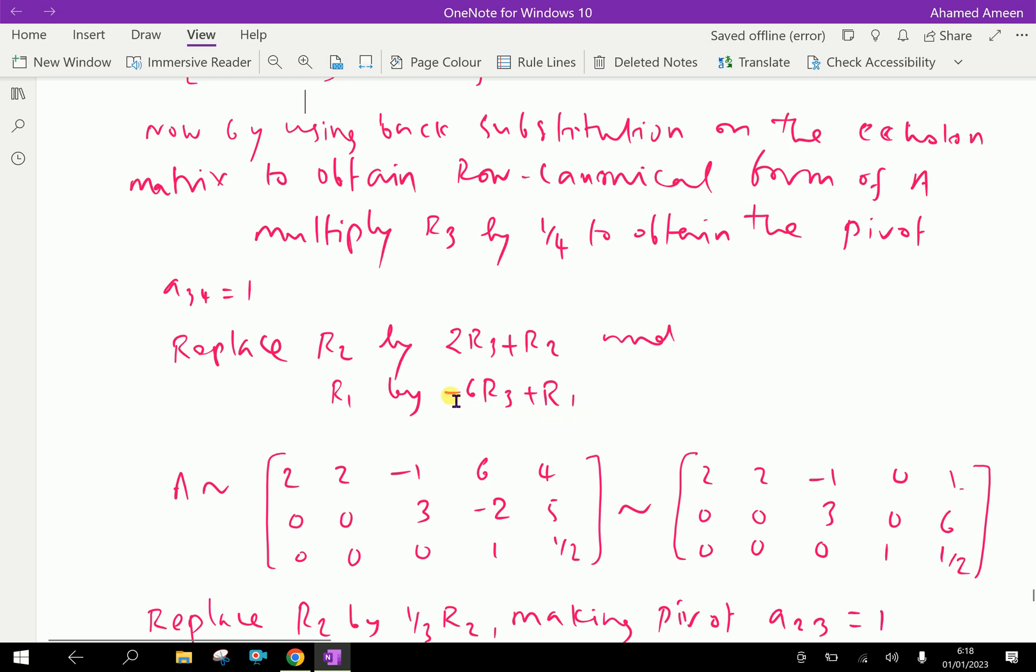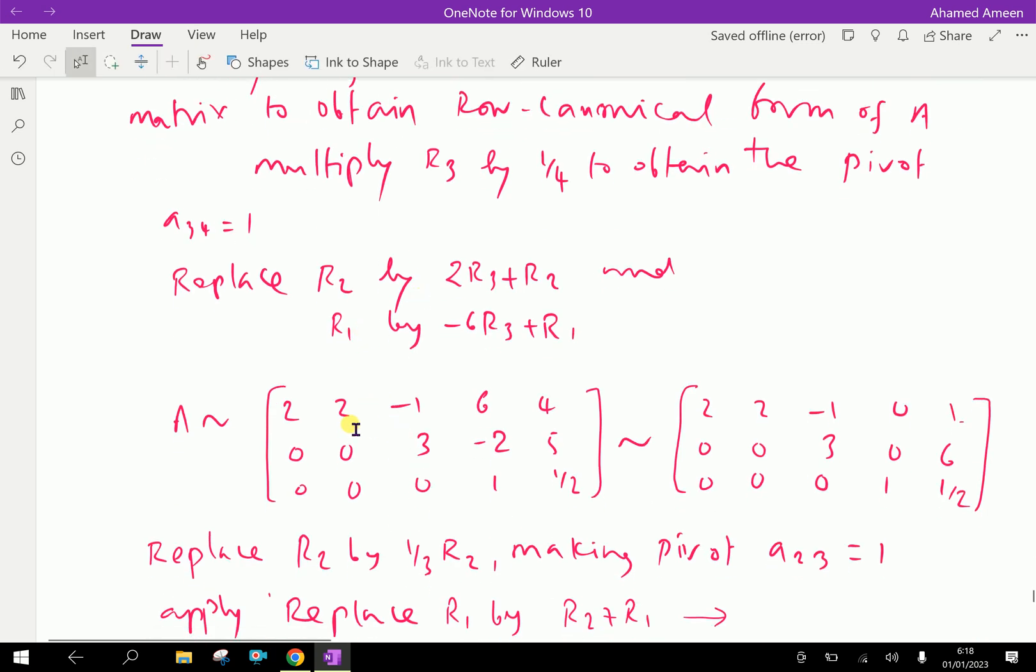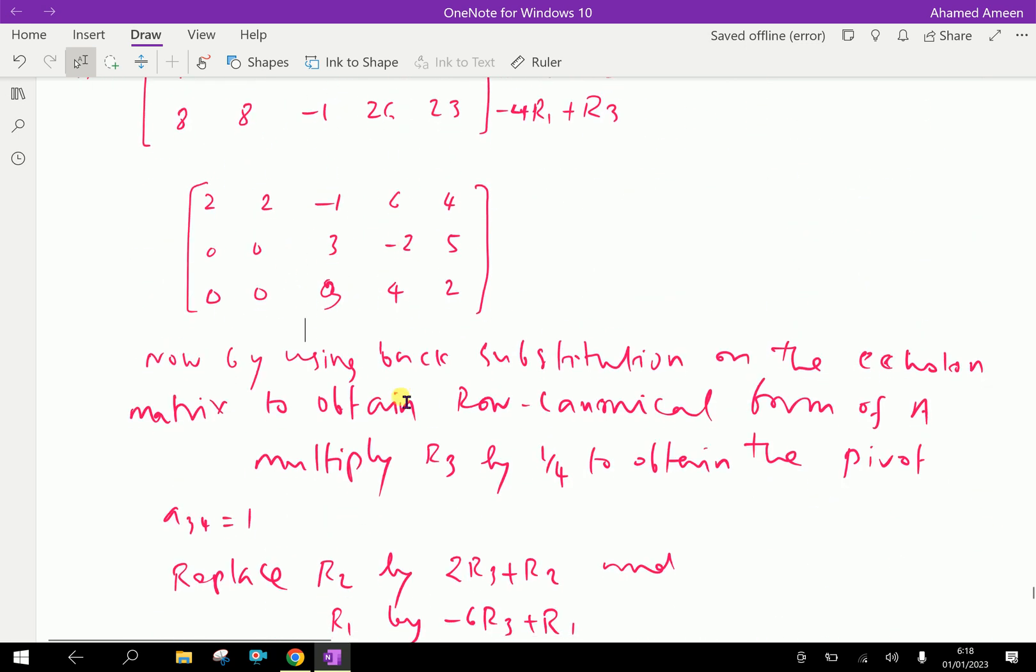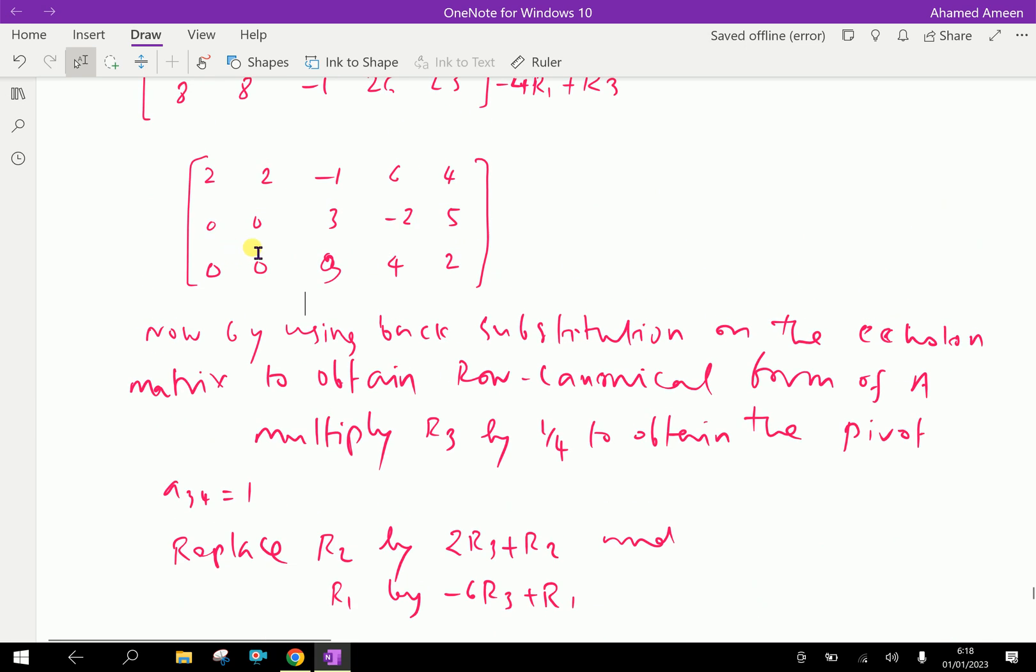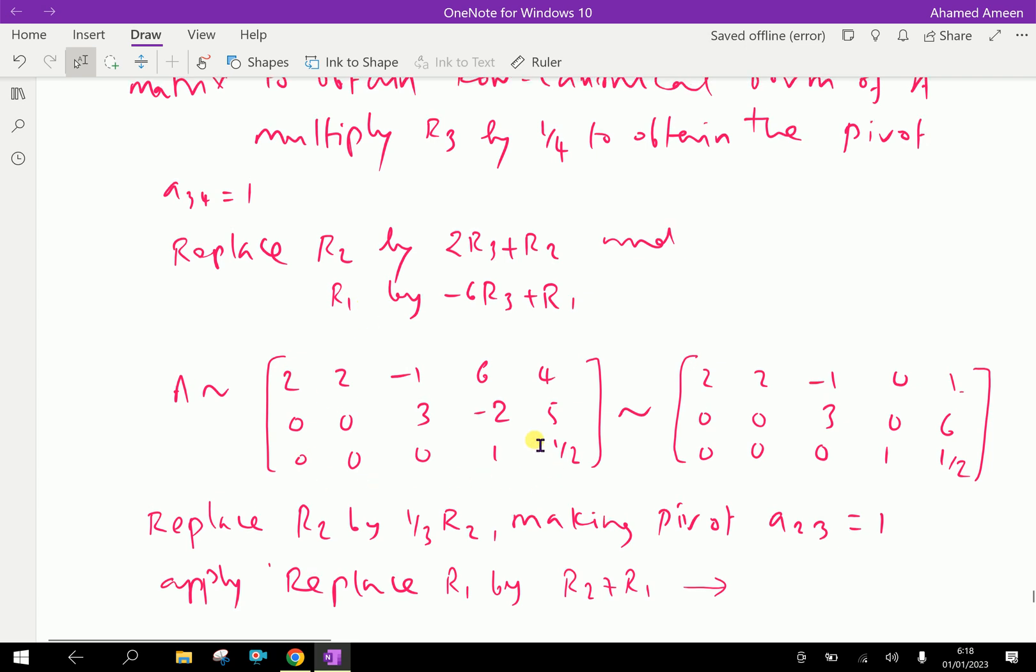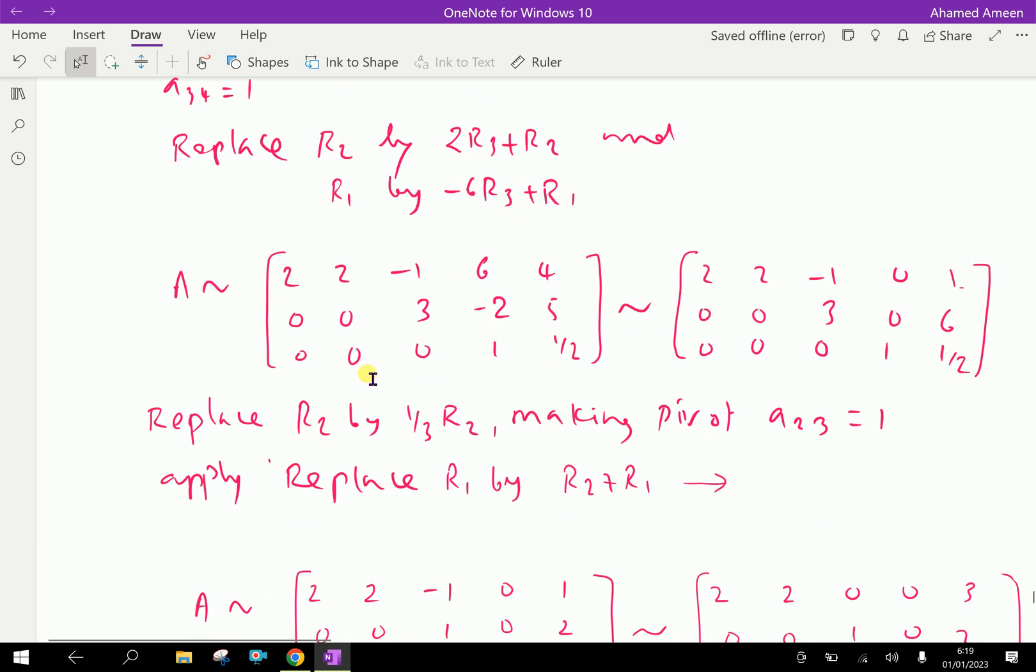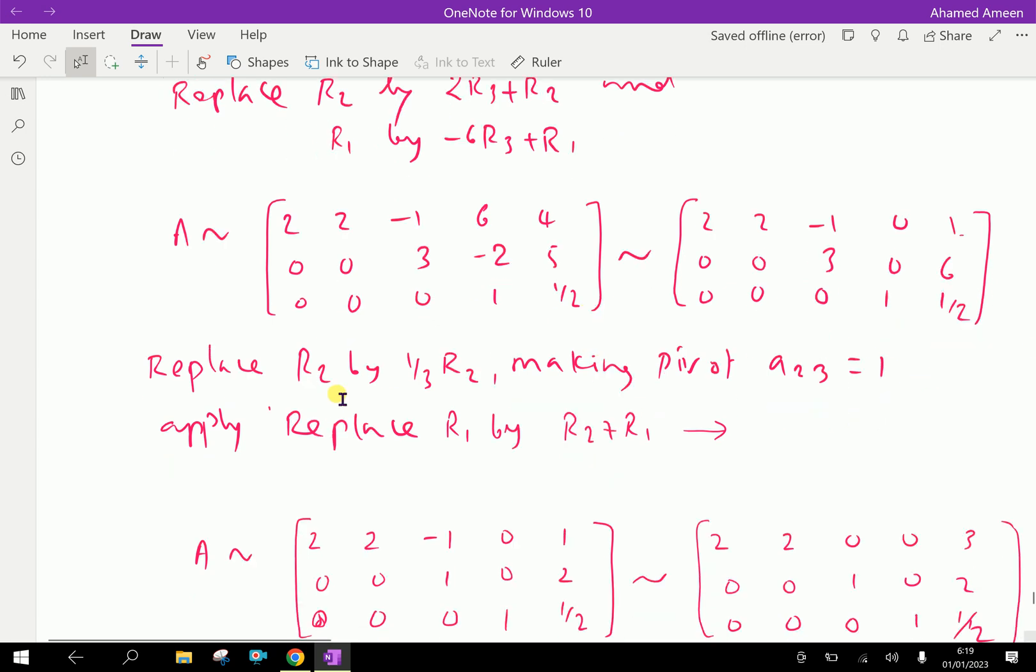Look here, first we are writing the first row as it is. The second row is 0, 0, 1, minus 2, 5. Third is 0, 0, 0, 1, half, because we are multiplying with 1 by 4. Then after this replacement, we get 2, 2, minus 1, 0, 1.